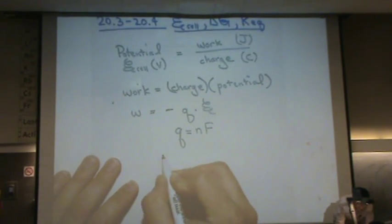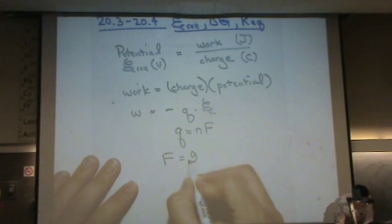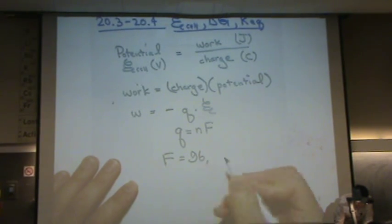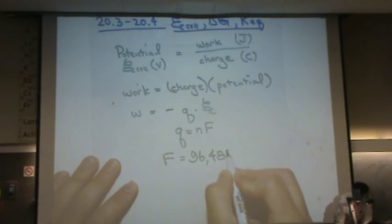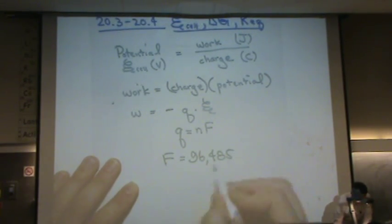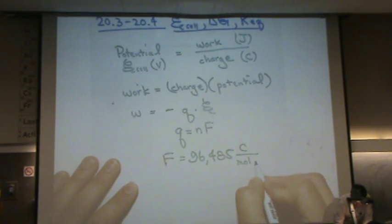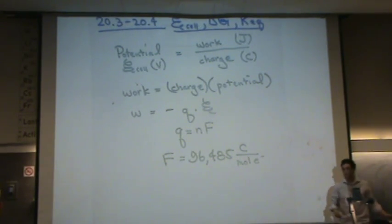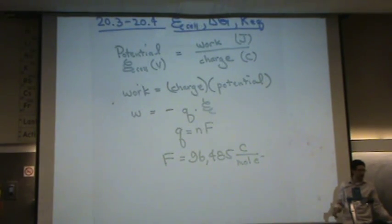F is a constant — 96,485 coulombs per mole of electrons. That's just a measured constant, and it will be given to you.